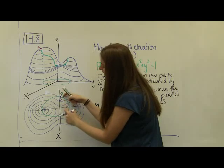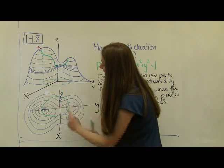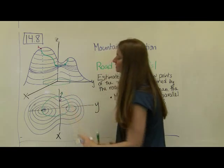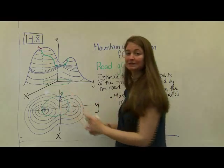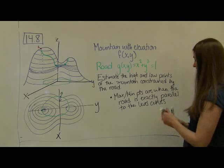In this case, at the min, the gradient of the mountain is pointing inwards, and the gradient of the road is pointing outwards. That's okay. Those are still parallel vectors. They're just multiplied by a scalar multiple that's negative.